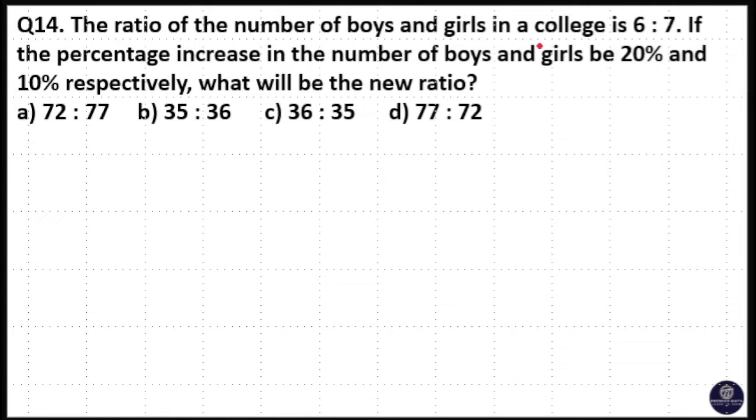The ratio of the number of boys and girls in a college is 6 to 7. If the percentage increase in the number of boys and girls is 20% and 10% respectively, what will be the new ratio?